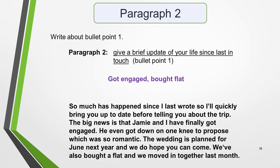In the second paragraph, you write about bullet point 1, which is to give a brief update of your life since you were last in touch. My idea for this is that I got engaged and bought a flat. Remember to keep the language informal. You could write something like this: 'So much has happened since I last wrote, so I'll quickly bring you up to date before telling you about the trip. The big news is that Jamie and I have finally got engaged — he even got down on one knee to propose, which was so romantic. The wedding is planned for June next year, and we do hope you can come. We've also bought a flat and moved in together last month.'